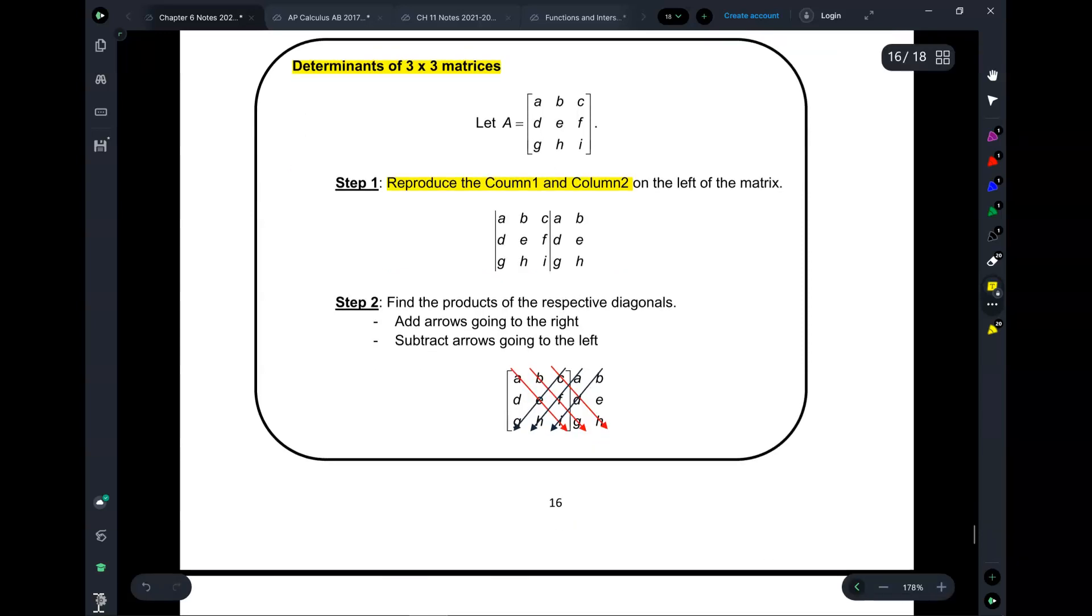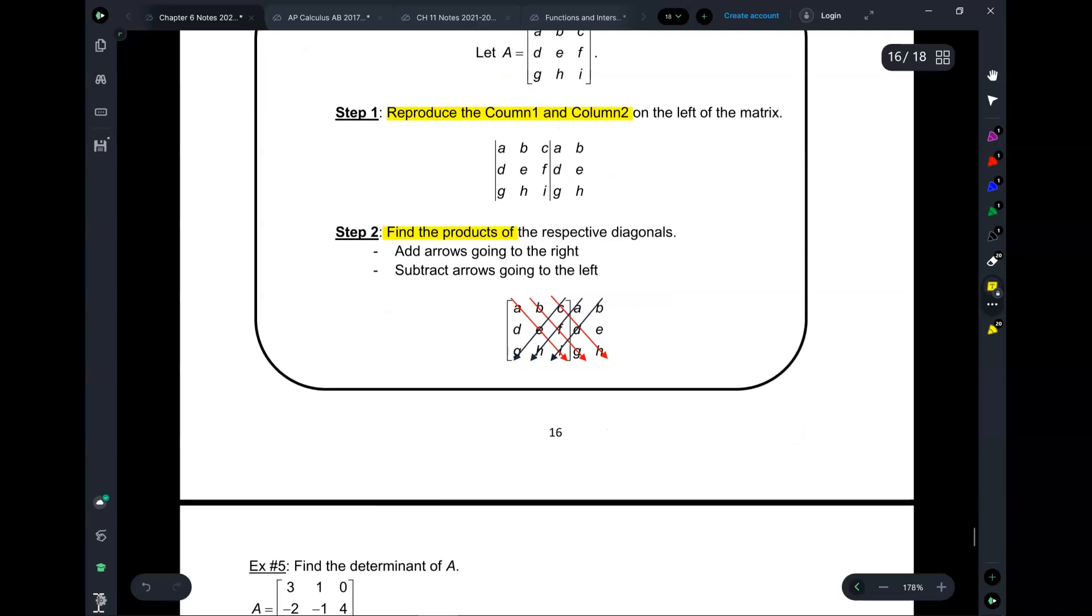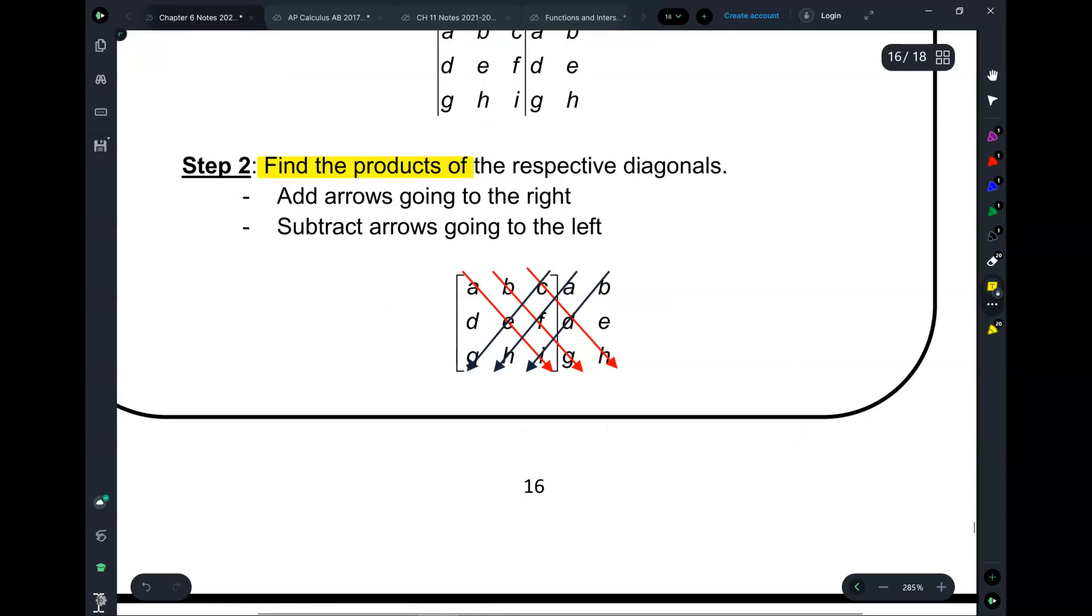Next, you have to draw diagonals and find products of the respective diagonals. So do you see these diagonals here? I have a red one going this way and another one and another one. On each red diagonal, you have how many numbers? One, two, three. You multiply those by each other. Then you multiply those by each other. Then you multiply those by each other. Whatever you get from those, you add them to each other.